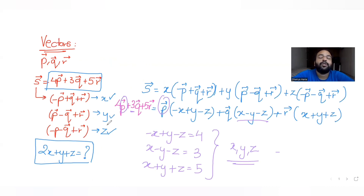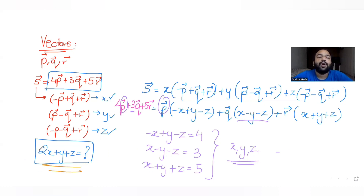The key idea: equate the two expressions for s̄, collect coefficients of p, q, and r, get three equations, find x, y, z, and substitute to find the result. I'll meet you again tomorrow with the next question. Till then, please like, share, and subscribe to my channel. Thank you.